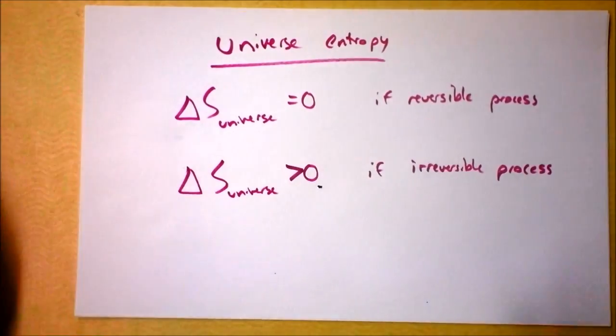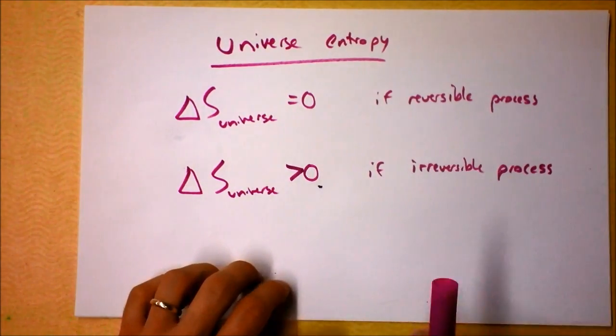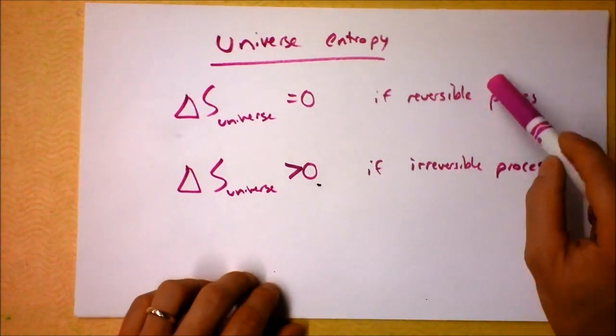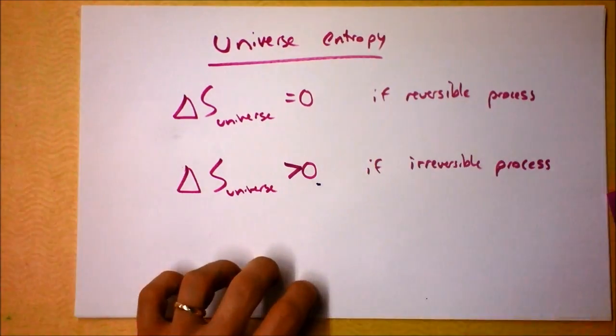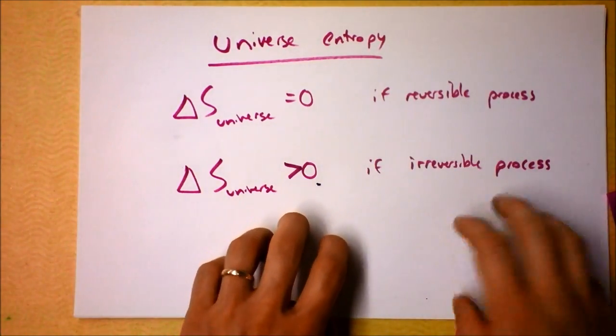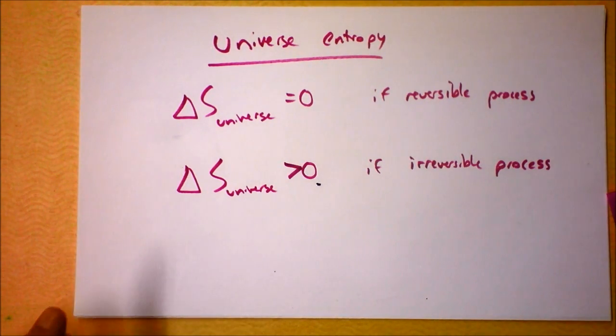And an irreversible process is one that you can't do the other way, and that is everything that happens, except an ideal engine. Ideal engine is a reversible process. You can play that sucker backwards and get that energy right back out. And irreversible processes would be setting a hot thing next to a cold thing because the heat will flow from the hot to the cold. Remember we said that's the arrow of time and all that nonsense?